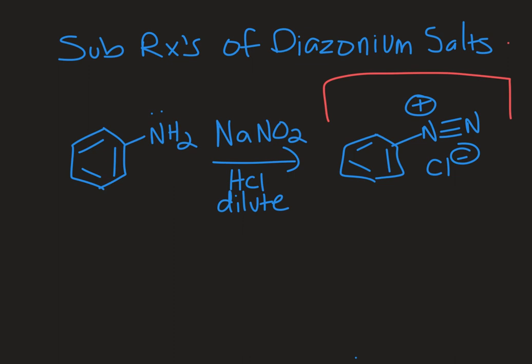So let's start with how we make a diazonium salt. We need an aniline derivative. So this specific molecule is aniline. You've got an NH2 group on there. You could have other groups as well but you need that NH2 group.